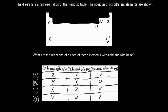Next question: diagram A is a representation of the periodic table showing the positions of six different elements — Y, X, U, V, Z, and W. What are the reactions of the oxides of these elements with acids and with bases? The answer options show different combinations of which oxides react with acids and which react with bases.